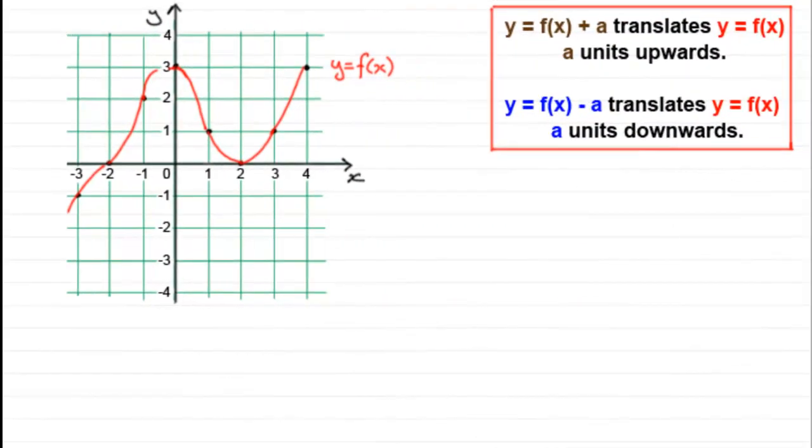Hi, welcome to another video in my series on why particular transformations do what they do. In this particular video I'm going to be looking at y equals f of x plus a, which will translate the graph of y equals f of x a units upwards, and y equals f of x minus a, which translates the graph of y equals f of x a units downwards. So why does it do this type of transformation?